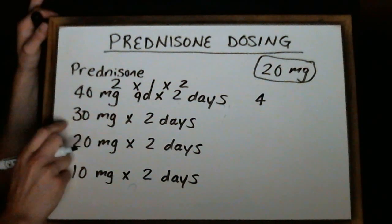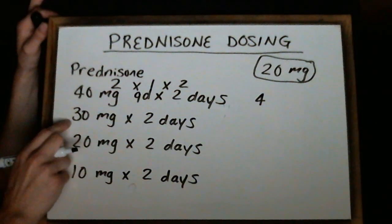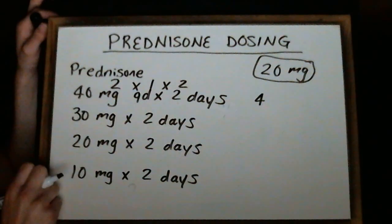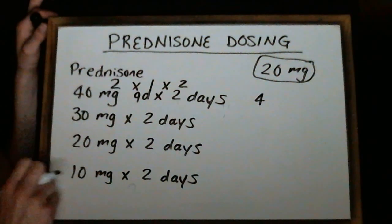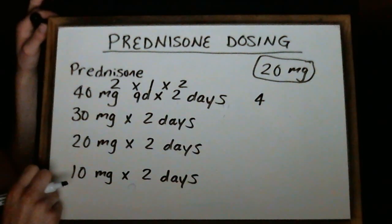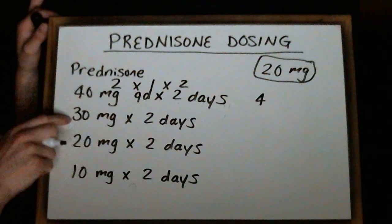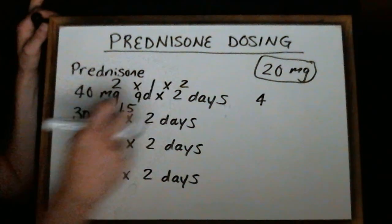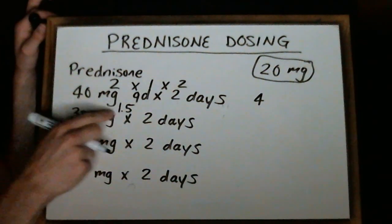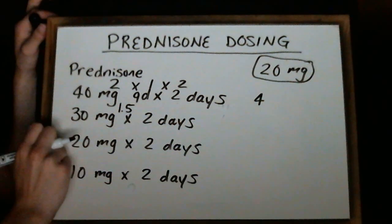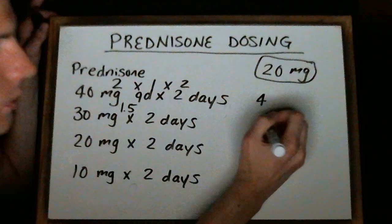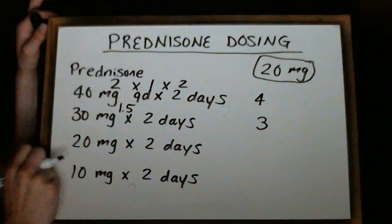For the second line, we take 30 milligrams divided by 20, which gives us 1 and a half tablets. This is where, if you use the 20 milligram tablet, either patients are going to have to split the tablet themselves or the pharmacist will do it for them. So 1.5 multiplied by 1 for once a day, multiplied by 2 for 2 days, and we get 3 tablets for the second line.